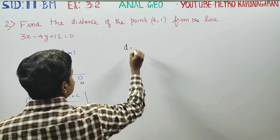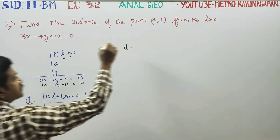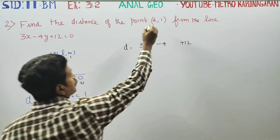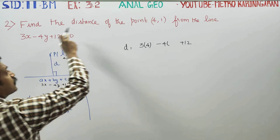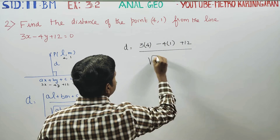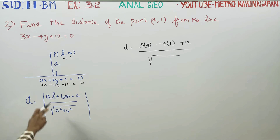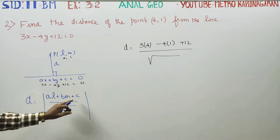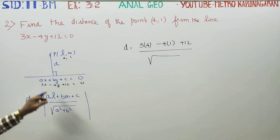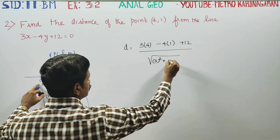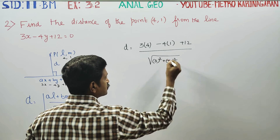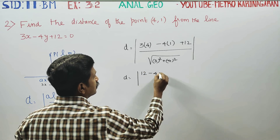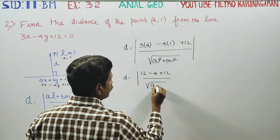Substituting into the distance formula: D = |3×4 + (-4)×1 + 12| / √(3² + 4²). That gives us |12 - 4 + 12| divided by the square root of 9 + 16, which is √25.